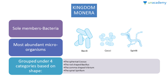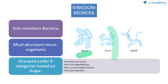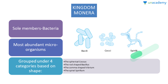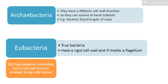First is Kingdom Monera, whose sole members are bacteria — the most abundant microorganisms. Monera are grouped into four categories based on shape: the spherical coccus, the rod-shaped bacillus, the comma-shaped vibrio, and the spiral-shaped spirillum.